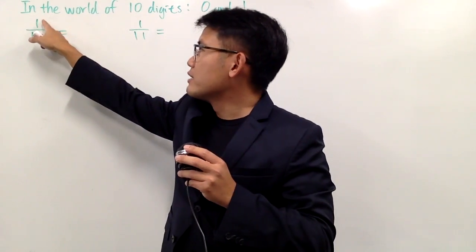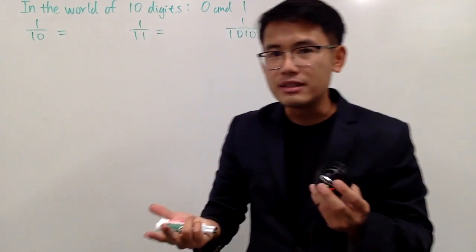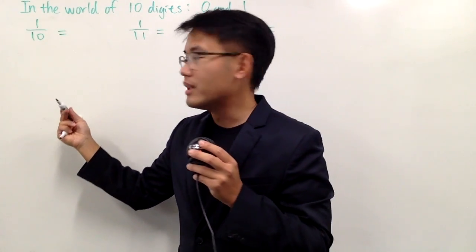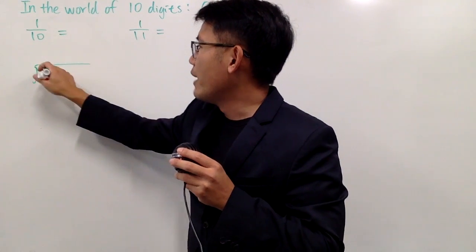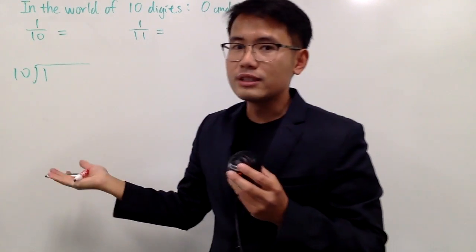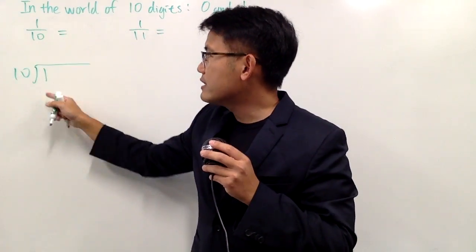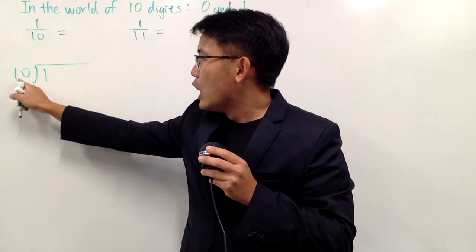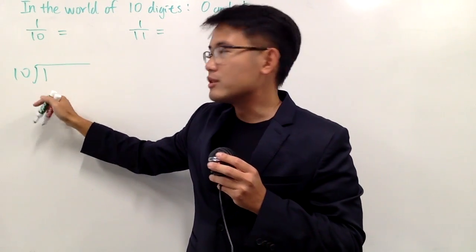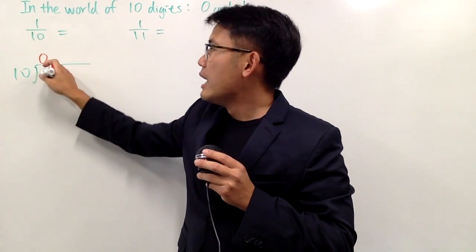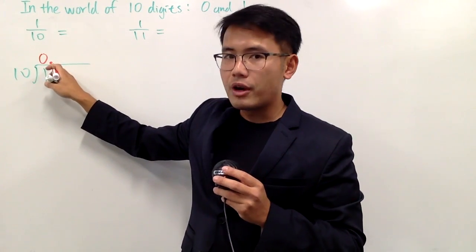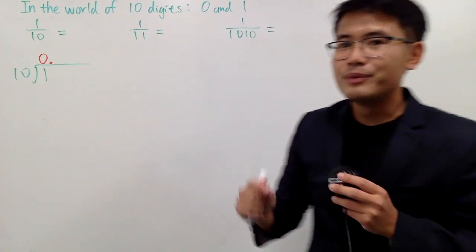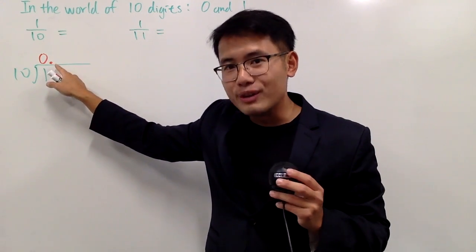First of all, this right here is 1 over 10, which is the same as saying 1 divided by 10. Let's go ahead and do the long division — put 1 inside and 10 on the outside, just as usual. The top number goes inside, the bottom number goes on the outside. 10 doesn't go into 1, so you put a zero right here. And now we are going to add a point here. In the world of only zeros and ones, you call this the binary point.